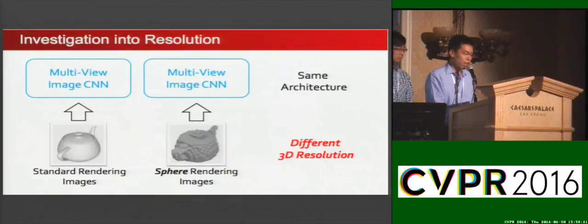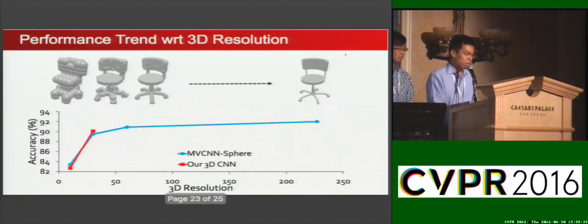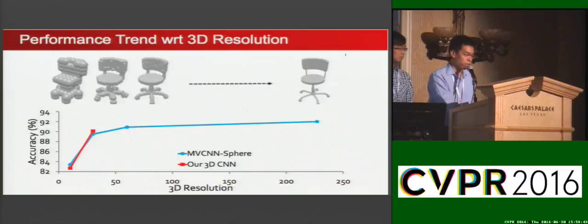Next, we revisit the effect of resolution. We keep the architecture fixed and vary the 3D resolution of sphere-rendered images. We observe a clear trend: when 3D resolution increases, multi-view CNNs perform better. The trend is similar for 3D CNNs. We see that 3D resolution matters, and as future work, volumetric-based methods need to accommodate higher resolution.